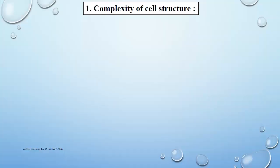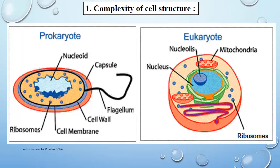Now for the complexity of cell structure: all organisms are classified as prokaryote and eukaryote. Prokaryotes lack a nuclear membrane, have no distinct nucleus, possess only a single chromosome, and their cells are smaller in size. Whereas in eukaryotes, they have membrane-bound organelles, a very defined nucleus, more than one chromosome, and eukaryotic cells are larger in size.